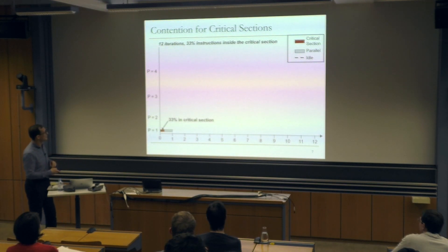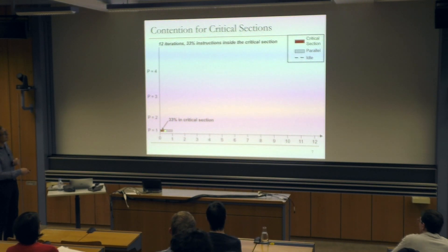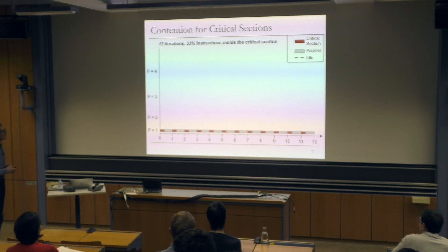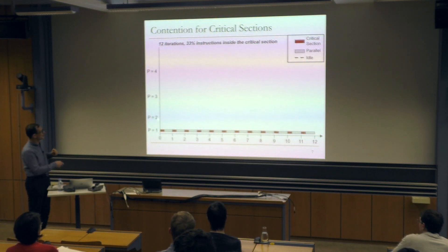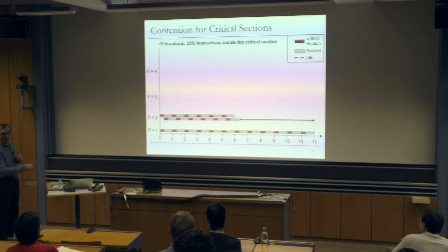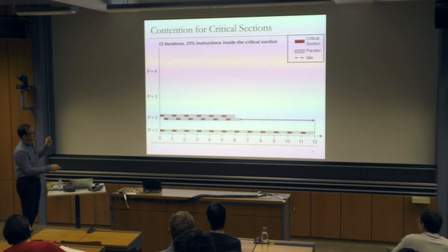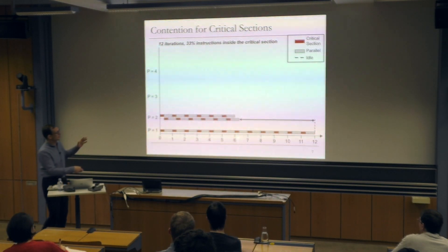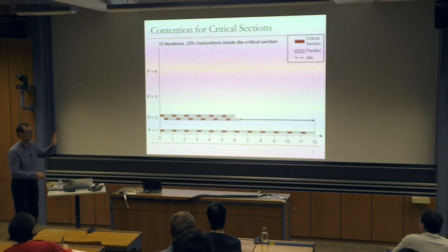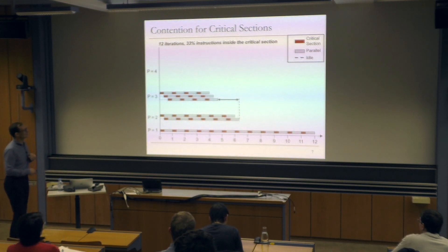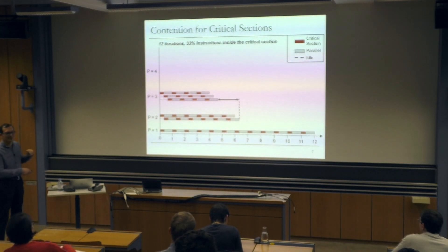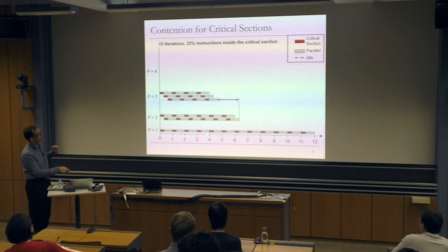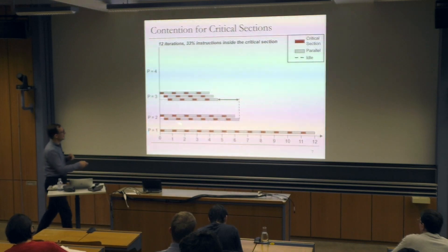With a single processor, 33% of each iteration is in the critical section and the rest is parallel, but no parallelism is exploited. With two processors, critical sections can't execute in parallel — only one processor can be in the critical section at a time — but the parallel parts can overlap. You get almost 2x performance improvement by overlapping the latency of the critical section. With three processors, it's becoming difficult to overlap critical section latency, some waiting happens, but you still get speedup close to 3x. With four processors, you don't gain performance anymore.